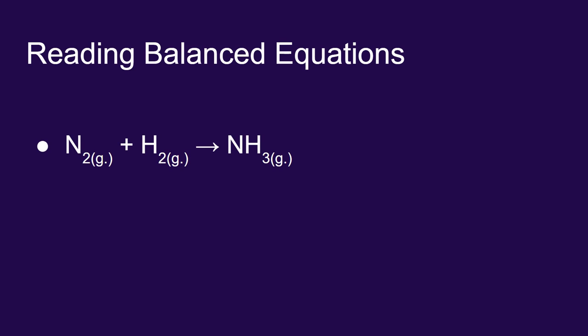From the department of redundancies department, let's do this one more time. This reaction—please, please, please balance it first. We could say that one molecule of nitrogen gas combines with three molecules of hydrogen gas to make two molecules of ammonia gas, or one mole of nitrogen gas combines with three moles of hydrogen gas to make two moles of ammonia gas.